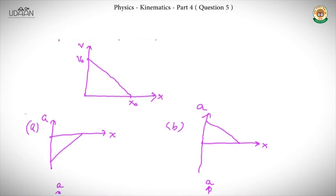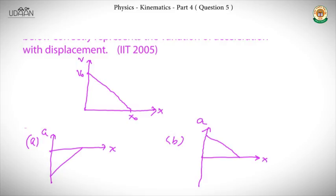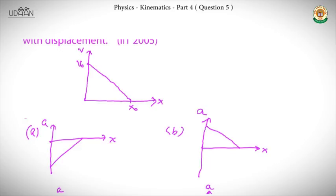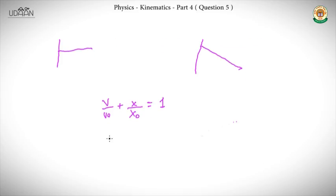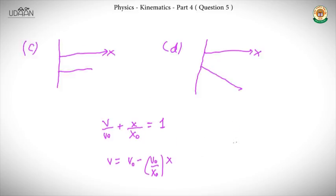We first find the relation between velocity and displacement. Since this is a straight line, we use the intercept form of a straight line: v/v₀ + x/x₀ = 1. You can also derive it using the y = mx + c form. This gives us the variation of velocity with displacement.